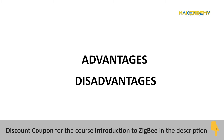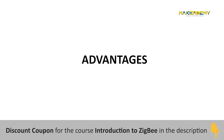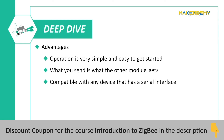The transparent mode has a few advantages and many disadvantages. This will give you context of when and where to use transparent mode. Advantages: one, the operation is very simple and easy to get started; two, what you send is what the other module gets; three, it is compatible with any device that has a serial interface.